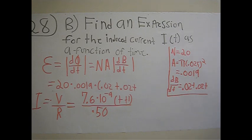All we have to do now is plug in some of the knowns that we're given in the problem, such as n being 20 and the area being πr², or π times 0.025 squared, which will simplify to 0.0019.